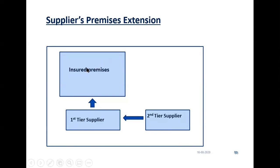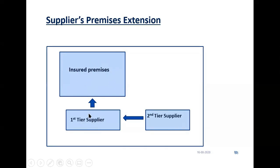So your loss of profit — this is the insured premises. If there is a damage here within this premises, your loss of profit will be paid. That will be paid under the LOP section of the policy. But what if the damage does not take place here? If the damage takes place at the supplier's premises, we will pay loss of profit arising out of your interruption of supplies.